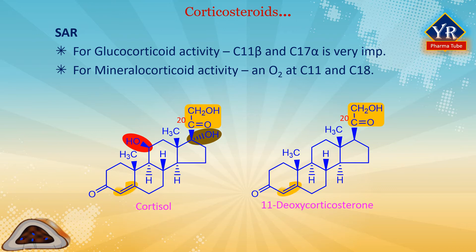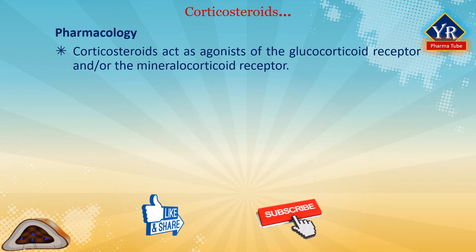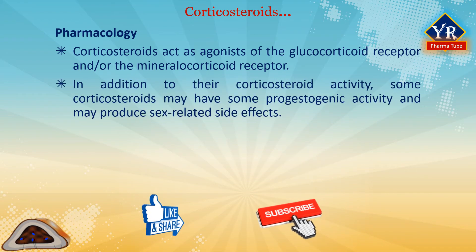The 4,5-double bond and the 3-keto functions are both required for typical adrenocorticoid steroid activity. The presence of an oxygen function at C11 is necessary for significant anti-inflammatory and carbohydrate-regulating activity, as shown by deoxycortisone. For fullest expression of carbohydrate-regulating and anti-inflammatory effects, the presence of a 17-alpha-hydroxyl group is required. These generalizations mostly hold true in synthetic analogues also. Corticosteroids act as agonists of the glucocorticoid receptor and/or the mineralocorticoid receptor. Some corticosteroids may also have progestogenic activity and may produce sex-related side effects.